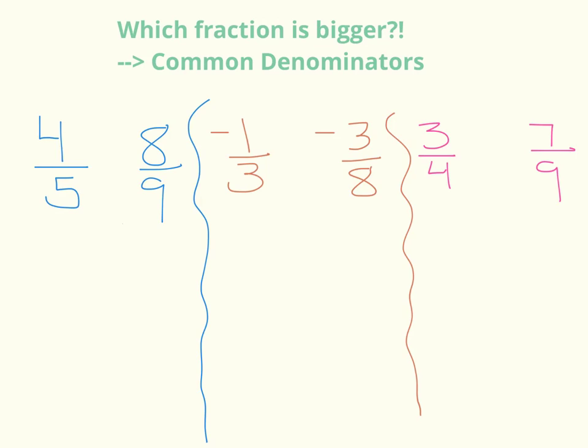My first set of fractions, I have four-fifths and eight-ninths. I need to decide which fraction is larger. Let's get a common denominator. So let's see, five and nine. Well, five times nine is 45, so I could rewrite these fractions with common denominator 45.